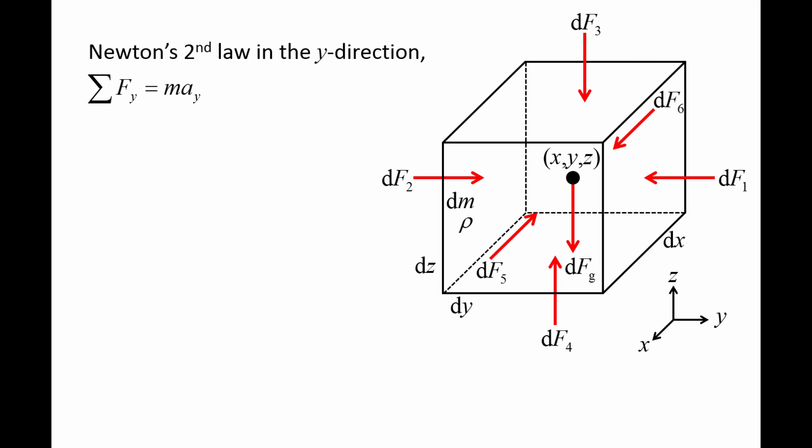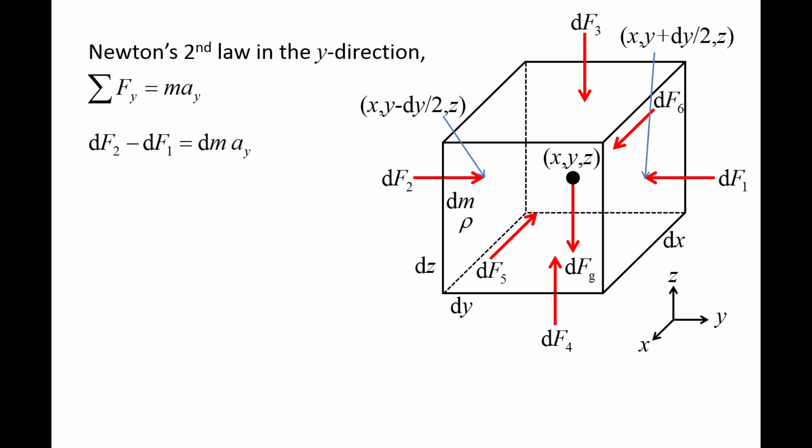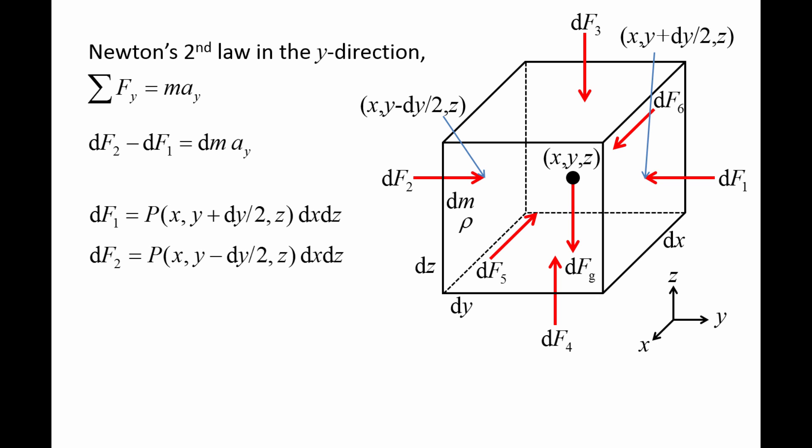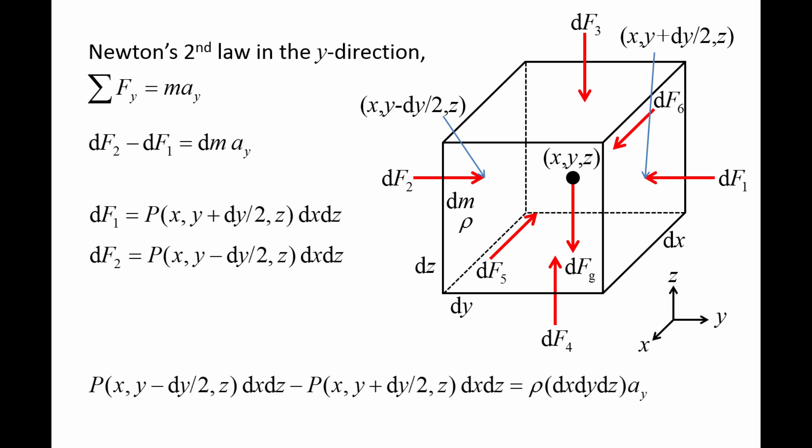Applying Newton's second law in the y-direction: df2 minus df1 equals the mass dm times the acceleration in the y-direction, ay. Both df1 and df2 act at a distance one-half dy away from the center. So df1 acts at point x, y plus half dy, z, and df2 acts at point x, y minus half dy, z. We can rewrite the pressure force df1 as the pressure at point x, y plus half dy, z, times the area dx dz. And the pressure force df2 is the pressure at point x, y minus half dy, z, times the area dx dz. Now we substitute the expressions for df1, df2, and dm into the equation of motion in the y-direction.